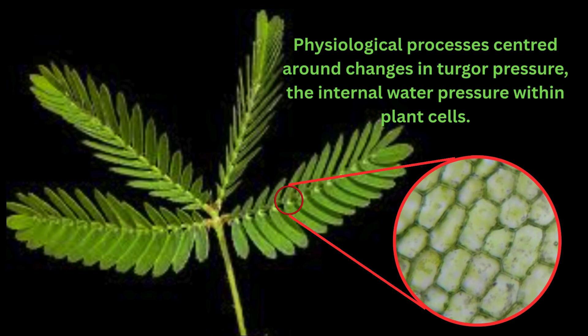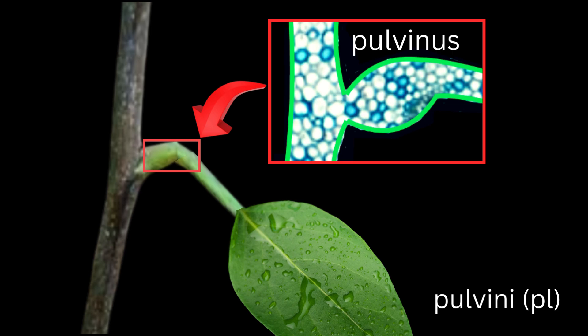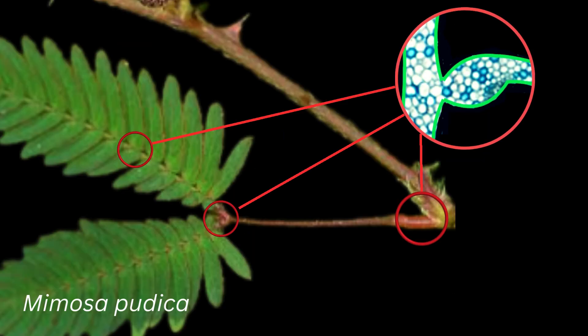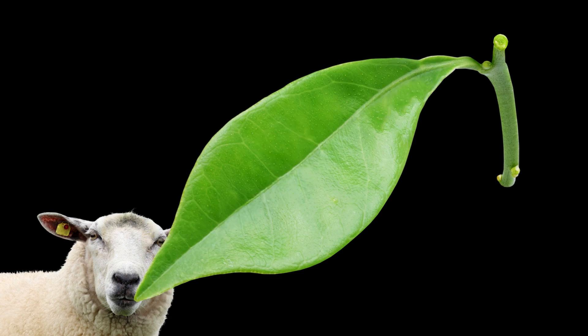The mechanism underlying most nastic responses in plants involves complex physiological processes centered around changes in turgor pressure — the internal water pressure within plant cells. These changes occur primarily in specialized motor cells located in pulvini, which are swollen joint-like structures typically found at the base of leaves or leaflets. Pulvini act as hinges that enable movement without growth, and are especially prominent in plants that exhibit rapid movements such as Mimosa pudica. When a plant perceives an external stimulus such as touch, light, or temperature, it triggers a rapid signaling cascade within the affected tissues.